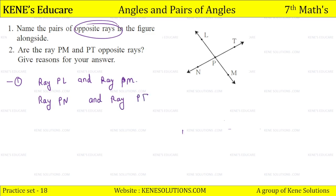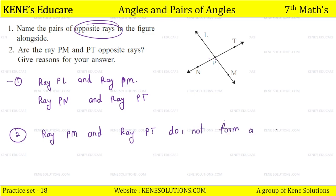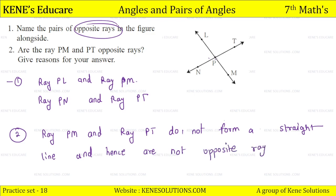Now the second question asked: are ray PM and ray PT opposite rays? No, these two are not opposite rays, because their origin is the same but PT and PM do not form a straight line. So therefore, ray PM and ray PT do not form a straight line, and hence are not opposite rays.